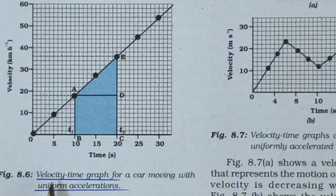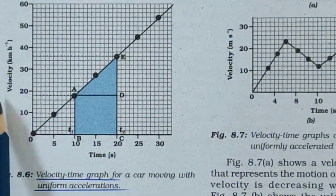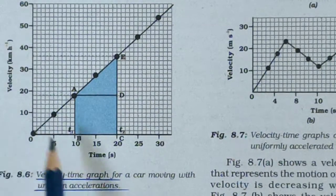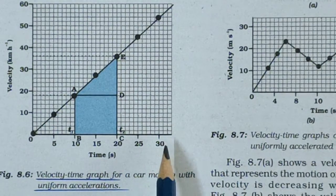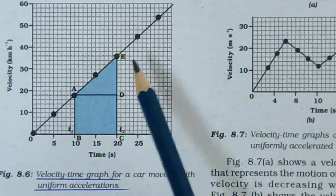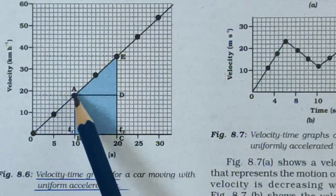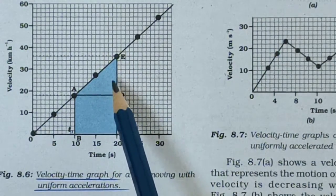This is the velocity-time graph for a car moving with uniform acceleration. We have taken velocity in km per hour on the y-axis and time taken on the x-axis. The area under the velocity-time graph gives the distance travelled.